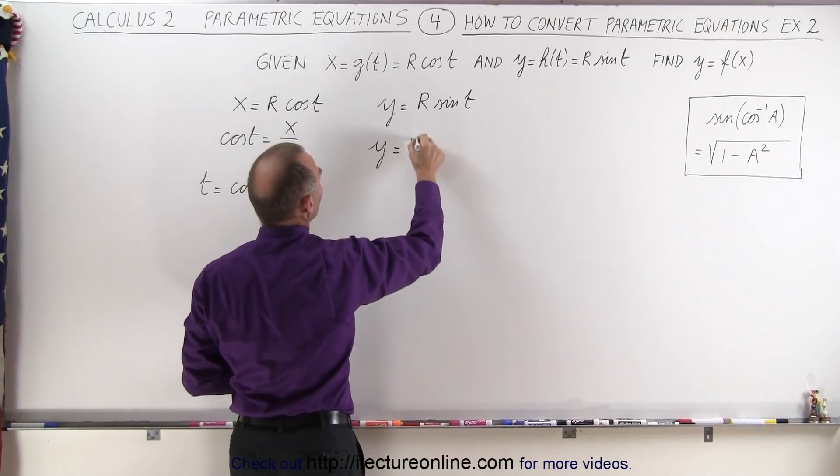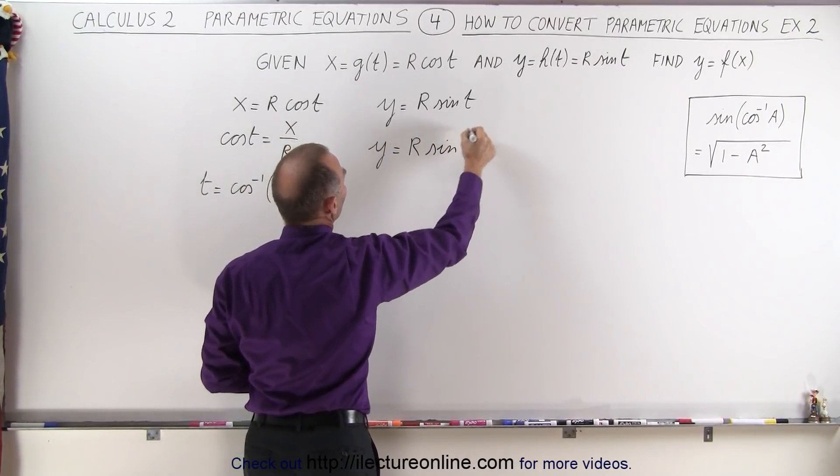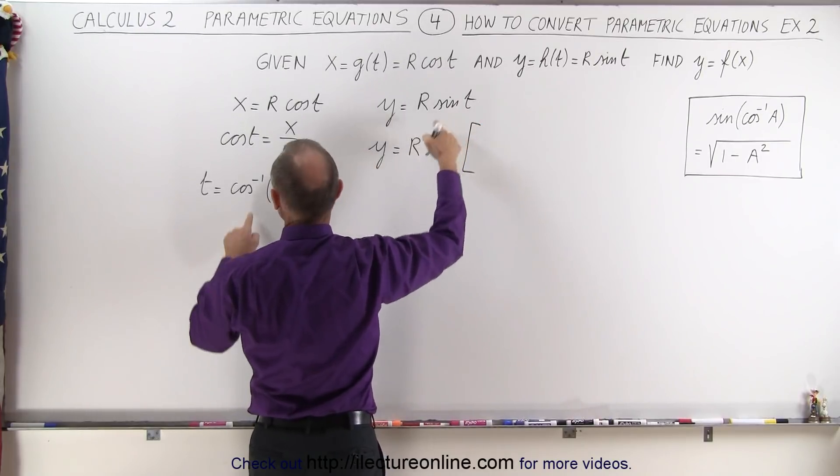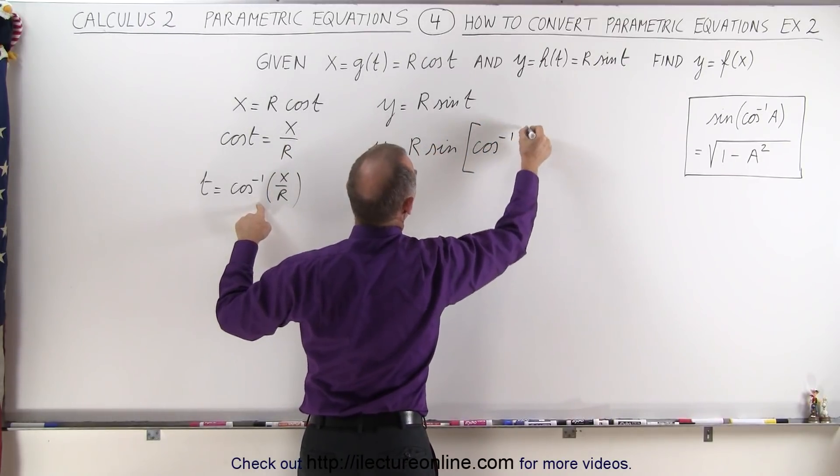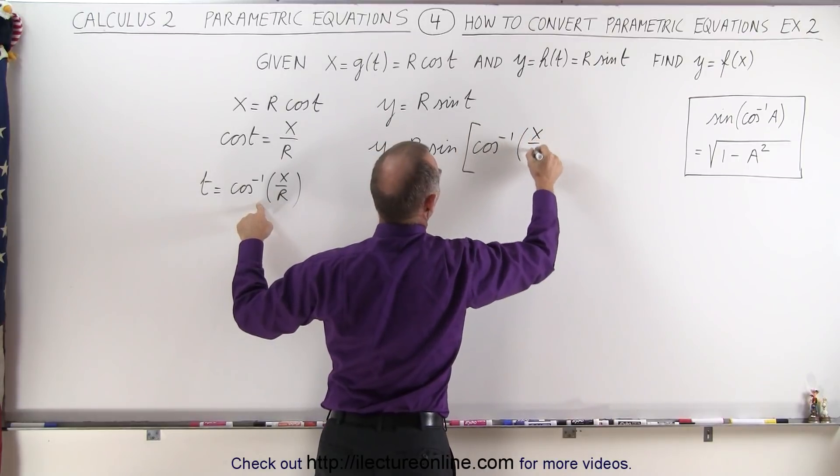So y is equal to r times the sine of, instead of t, we're going to write the inverse cosine of x over r.